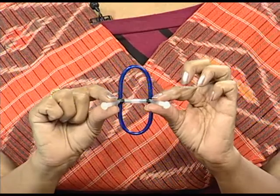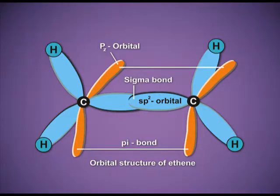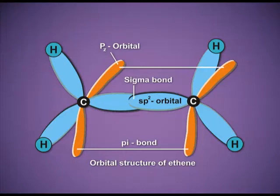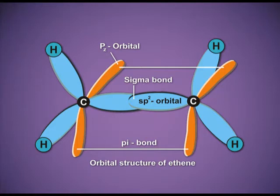This is the ethene molecule. You can see the sideways overlapping and the end-to-end overlapping. The blue orbitals are SP2 hybrid orbitals — the SP2 hybrid orbital of one carbon overlaps with the SP2 hybrid orbital of the other carbon, forming a sigma bond. The two remaining SP2 hybrid orbitals of each carbon form bonds with the 1S orbital of hydrogen. The unhybridized P orbital is shown by the yellow lobes, which undergo sideways overlapping to form the pi bond — two lobes above the plane and two lobes below the plane.